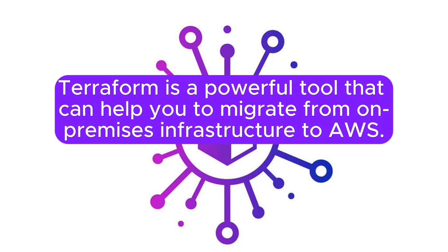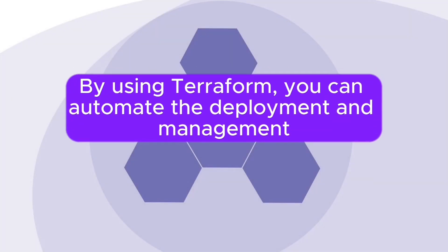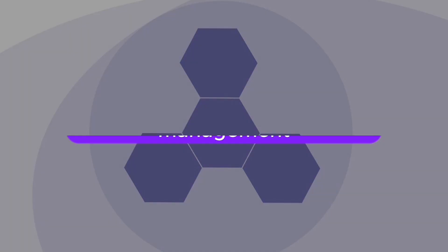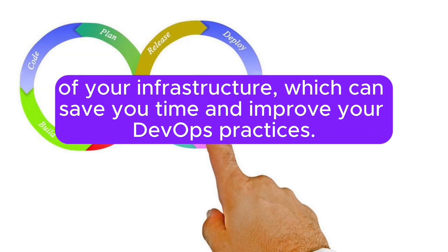Terraform is a powerful tool that can help you to migrate from on-premises infrastructure to AWS. By using Terraform, you can automate the deployment and management of your infrastructure, which can save you time and improve your DevOps practices.